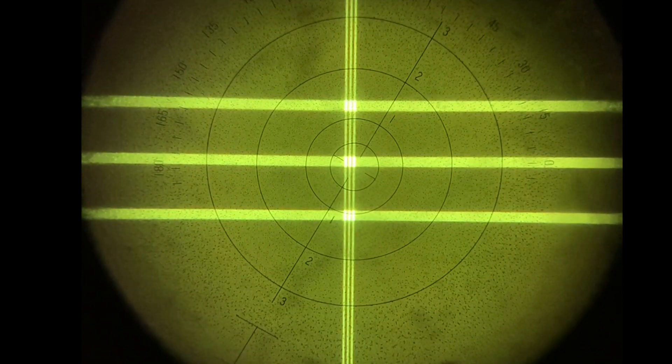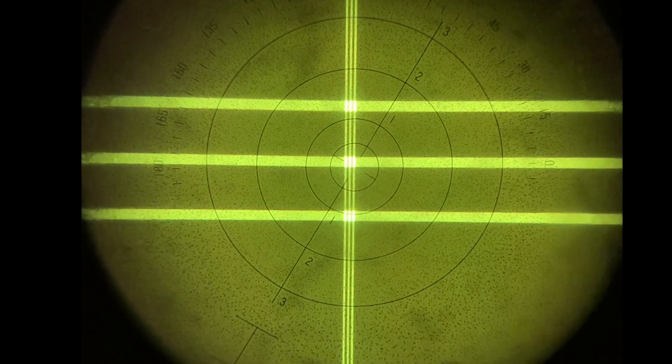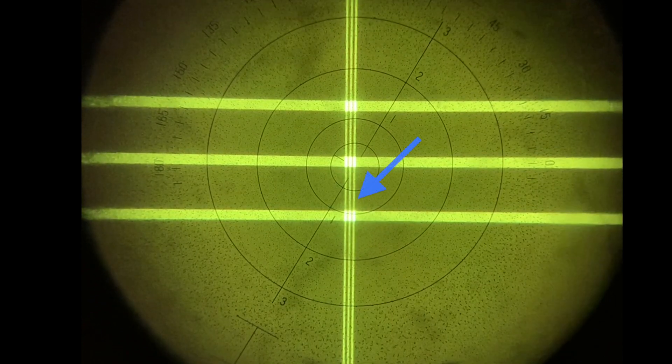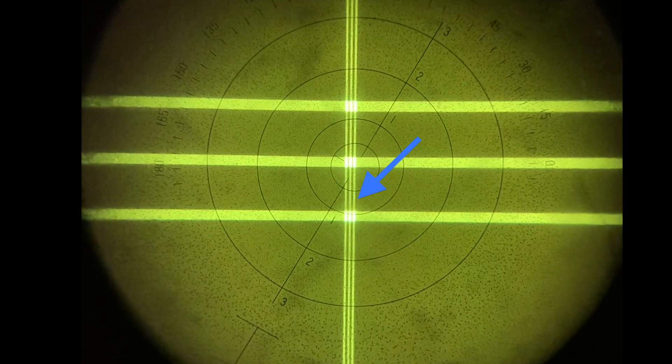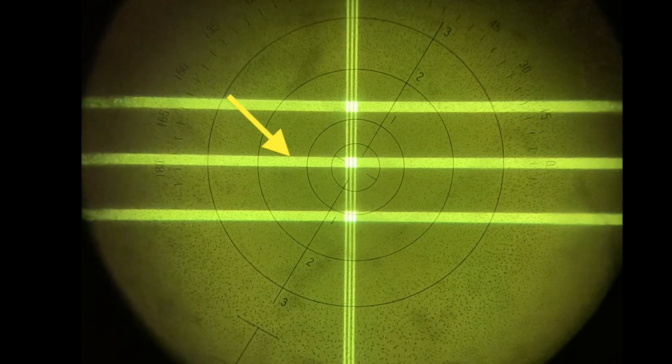In manual lensometry, you'll notice two sets of parallel lines. The blue arrow indicates our sphere lines. The yellow arrow indicates our cylinder lines.